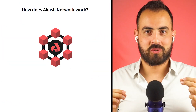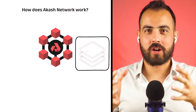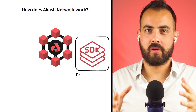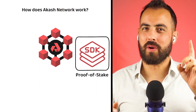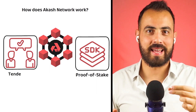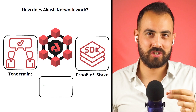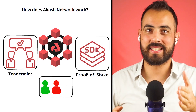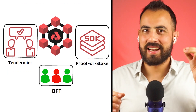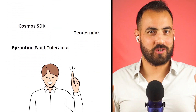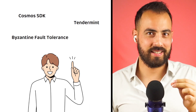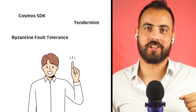The Akash Network was built using the Cosmos Software Development Kit, or SDK, meaning it is a Proof-of-Stake based blockchain which uses the Tendermint Consensus mechanism to verify its transactions and utilizes Byzantine fault tolerance to ensure accuracy. But there are a lot of crypto terms here, so let's quickly get our definitions straight so we are all on the same page.